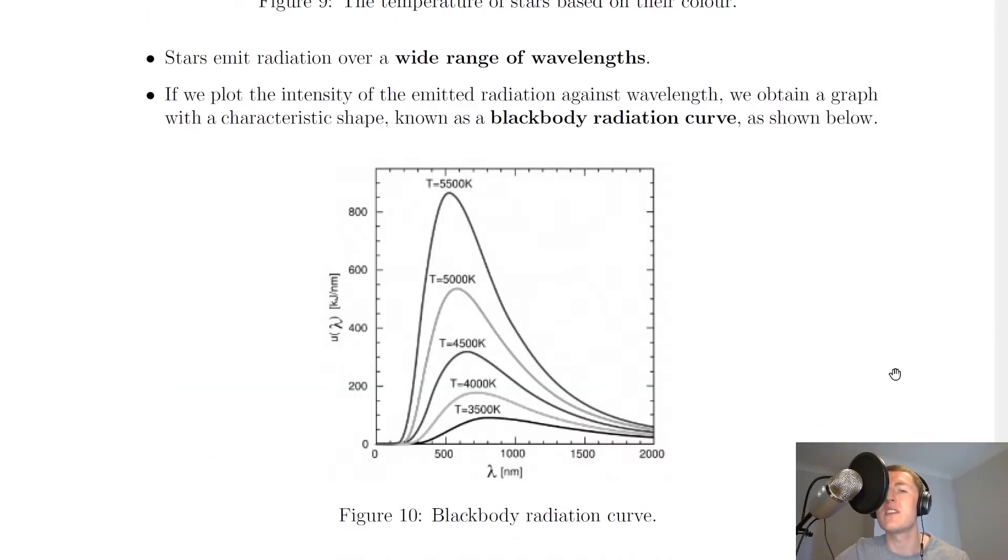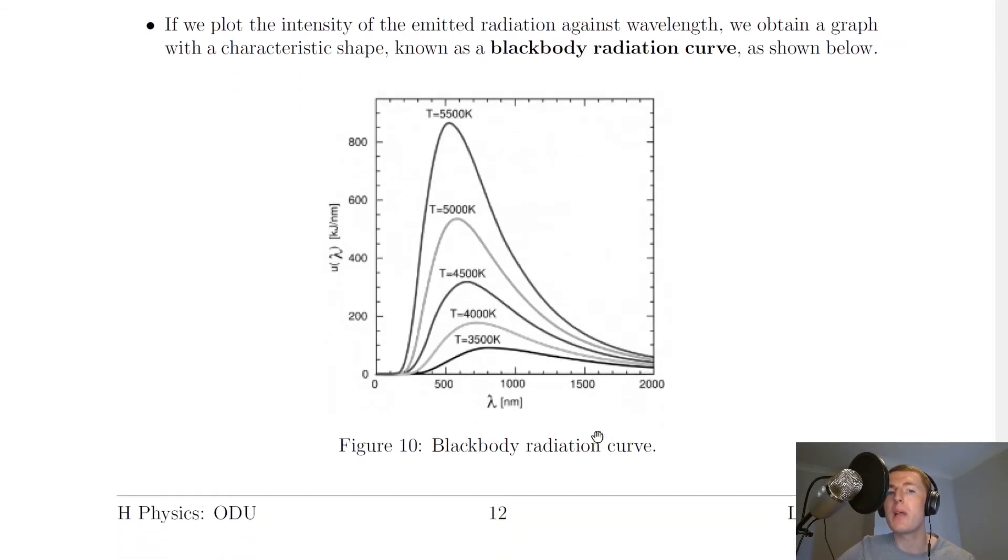The key thing to understand in this section is this stuff we're about to look at. Stars emit radiation over a wide range of wavelengths, so a wide range of colours. If we plot the intensity of the emitted radiation against wavelength, we obtain a graph with a characteristic shape known as a blackbody radiation curve. This is our blackbody radiation curve where we've got intensity of emitted radiation on the y-axis and the wavelength of the emitted radiation on the x-axis.